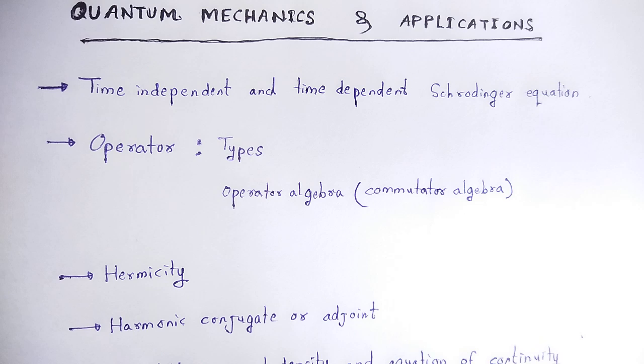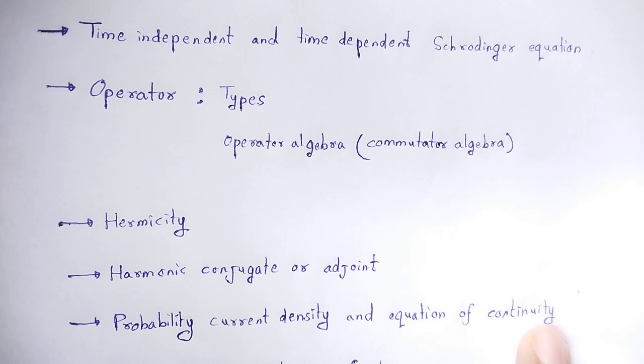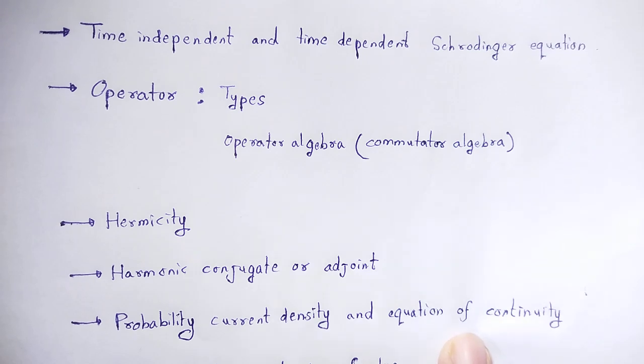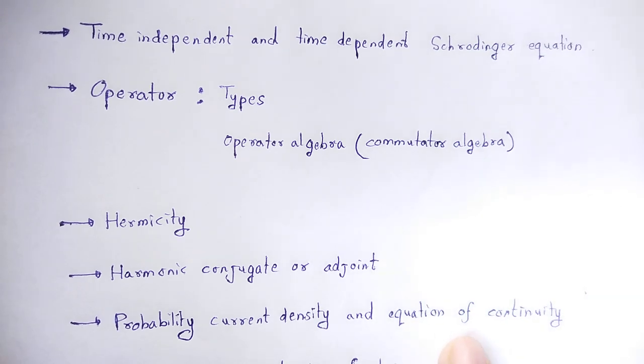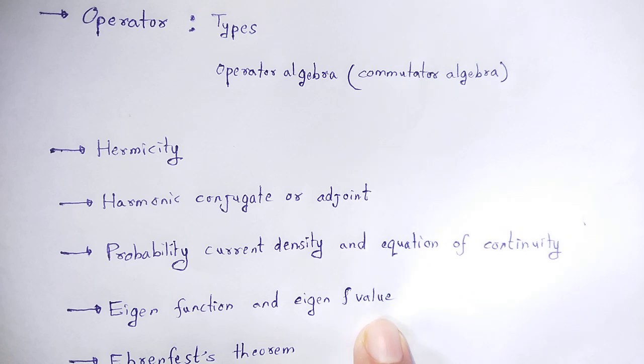The next important topic is probability current density or equation of continuity. Following this is the topic of eigenfunction and eigenvalue. This is the equation of eigenvalue, eigenfunction, eigenvalue operator, the eigenvalue equation.